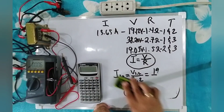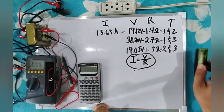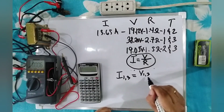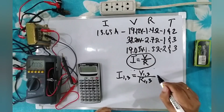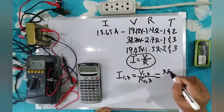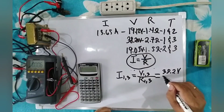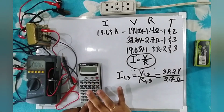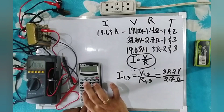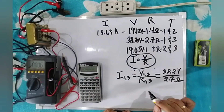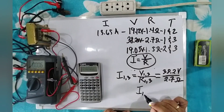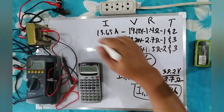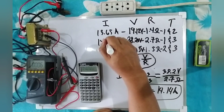Next, let's compute the no-load current of terminal one and three. Current of terminal one and three equals voltage of terminal one and three divided by resistance of terminal one and three. Substituting: 38.2 volts divided by 2.7 ohms. That equals 14.14 amperes. So the no-load current of terminal one and three is 14.14 amperes.